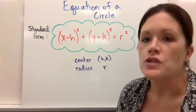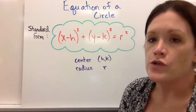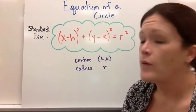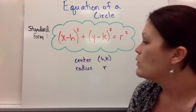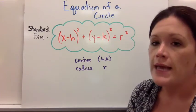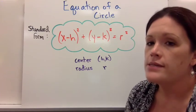Let's talk about the equation of a circle. The standard form for circles is x minus h squared plus y minus k squared equals r squared, where your center point is at the point (h, k) and your radius is equal to r.